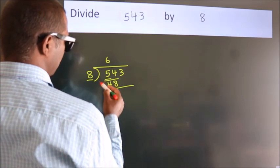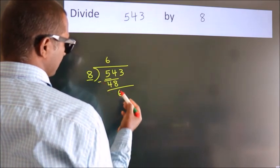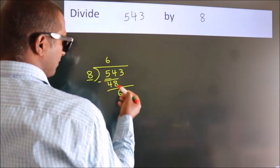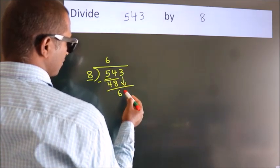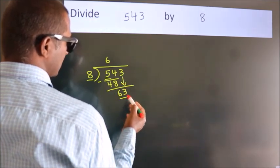Now we should subtract. We get 6. After this, bring down the beside number. So 3 down. So 63.